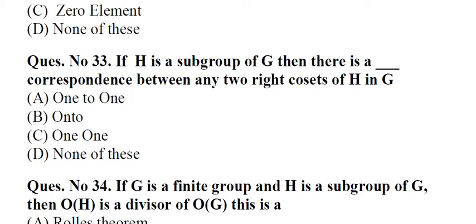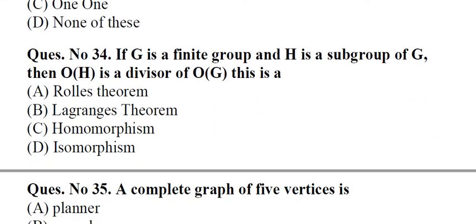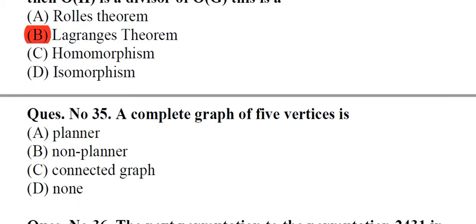Question number 33: If H is a subgroup of G then there is a underscore correspondence between any two right cosets of H in G. A. One to one, B. Onto, C. One one, D. None of these. Answer: A, One to one. Question number 34: If G is a finite group and H is a subgroup of G, then O(H) is a divisor of O(G), this is A. Rolle's theorem, B. Lagrange's theorem, C. Homomorphism, D. Isomorphism. Answer: B, Lagrange's theorem.